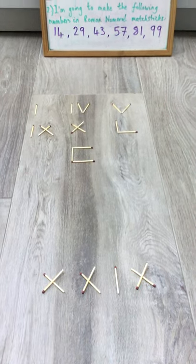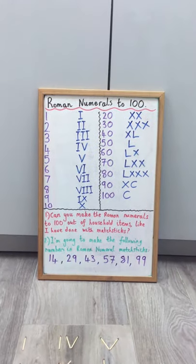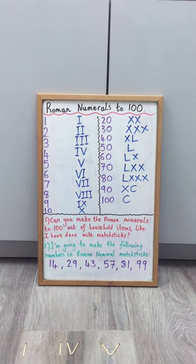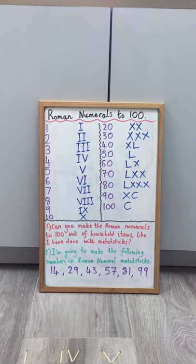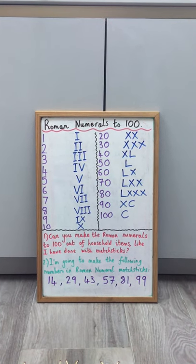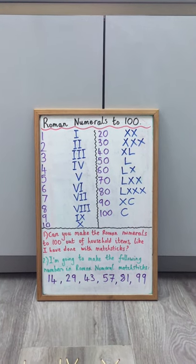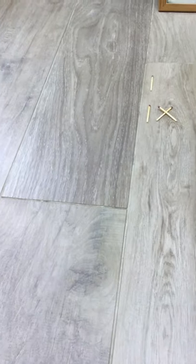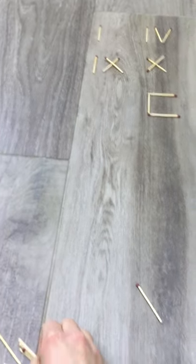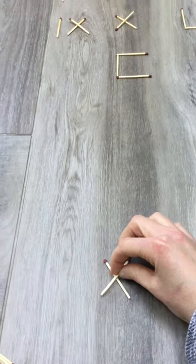Okay let's try and do just one more. Let's try and do 43. So 43 is made up of four tens so that makes 40 and three units. So if I have a look on my chart 40 is represented as XL so I'll start with that. I've got my X there and I need my L as well.